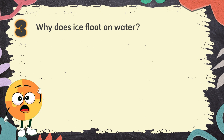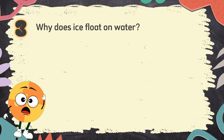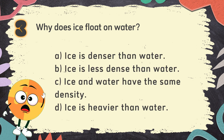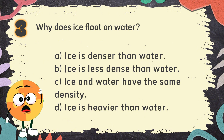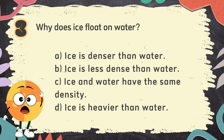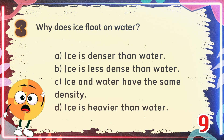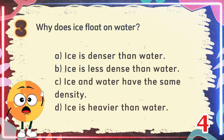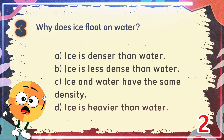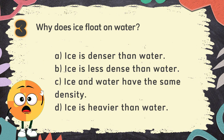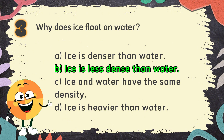Number 3. Why does ice float on water? The choices are: A. Ice is denser than water, B. Ice is less dense than water, C. Ice and water have the same density, D. Ice is heavier than water. The correct answer is B. Ice is less dense than water.